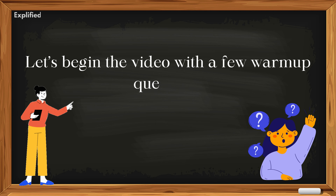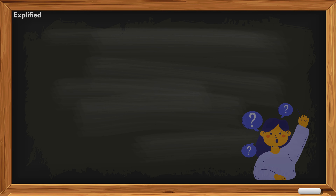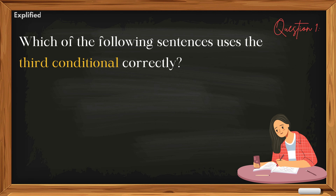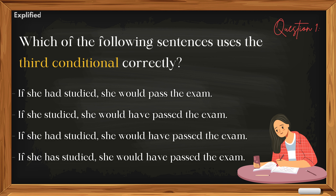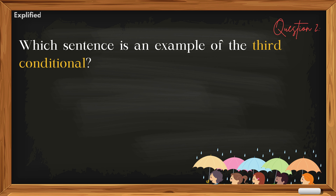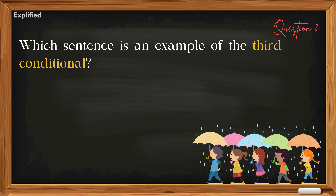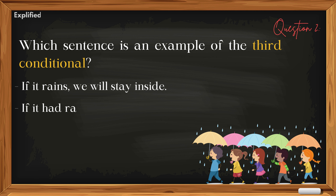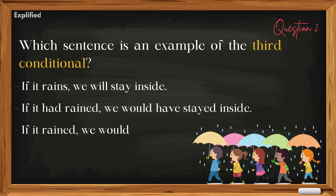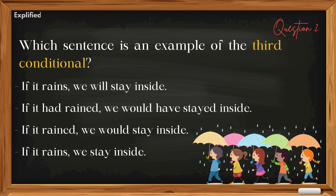Let's begin the video with a few warm-up questions. Question 1: Which of the following sentences uses the third conditional correctly? 'If she had studied, she would pass the exam.' Question 2: Which sentence is an example of the third conditional? 'If it rains, we will stay inside.' 'If it had rained, we would have stayed inside.' 'If it rained, we would stay inside.' 'If it rains, we stay inside.'